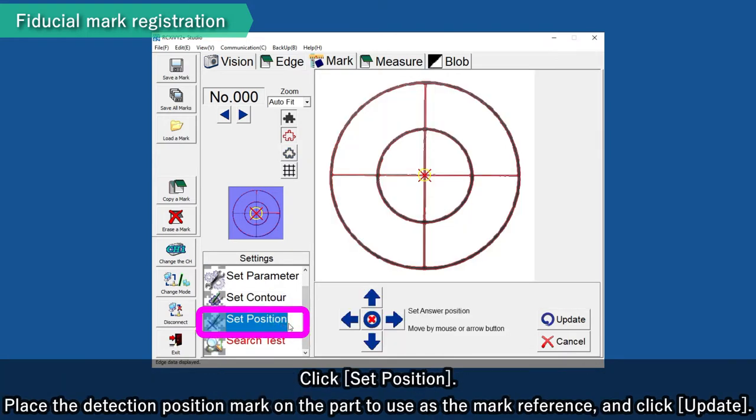Click Set Position, place the detection position mark on the part to use as a mark reference and click Update.